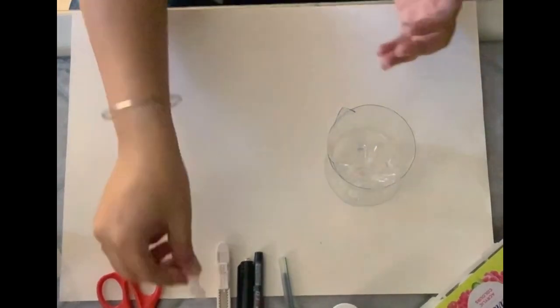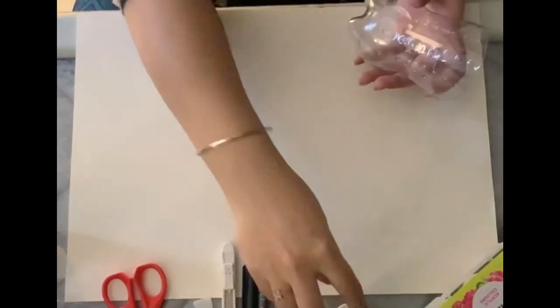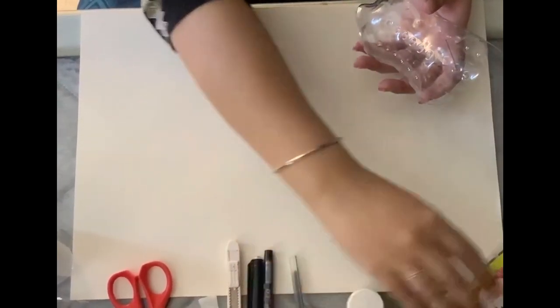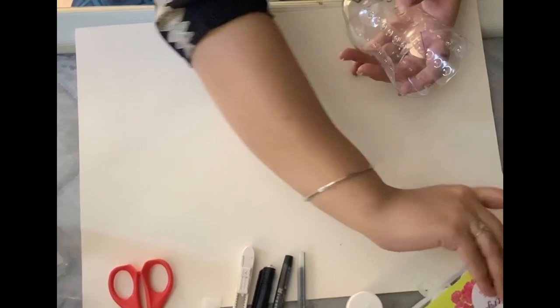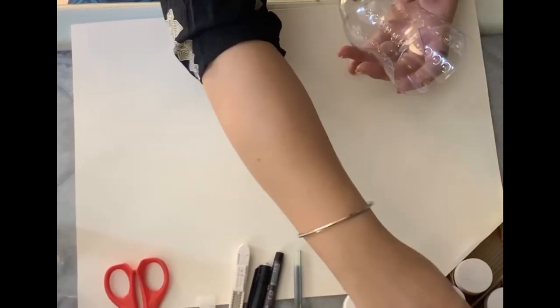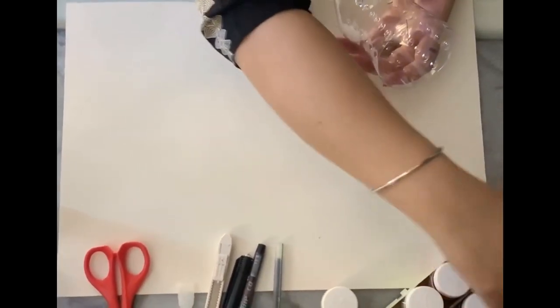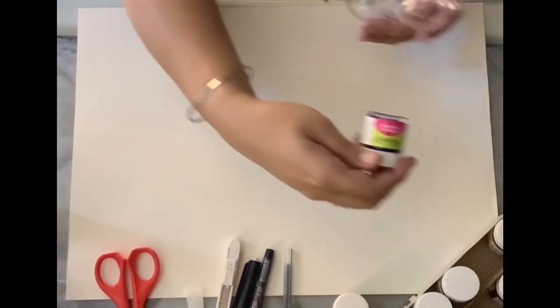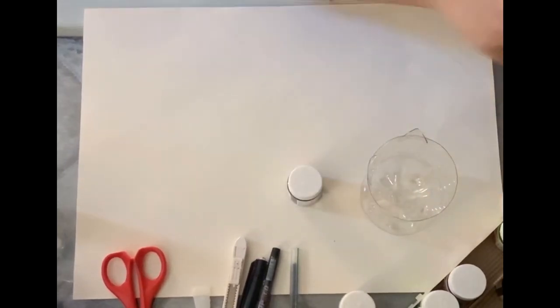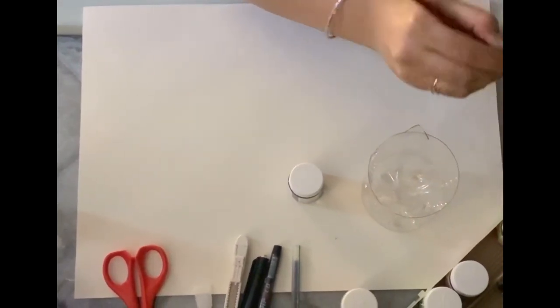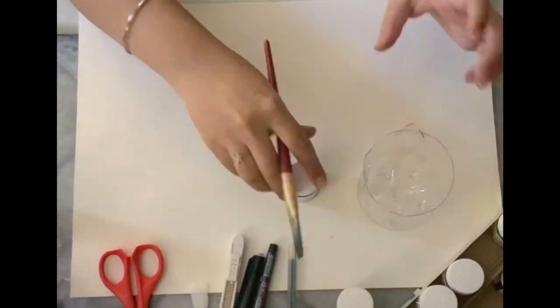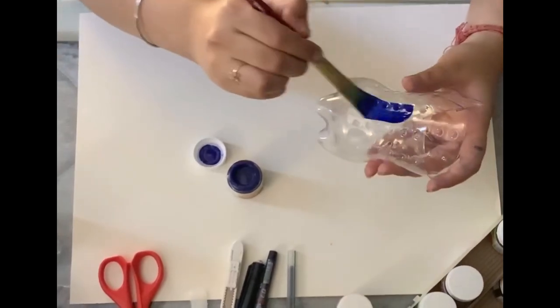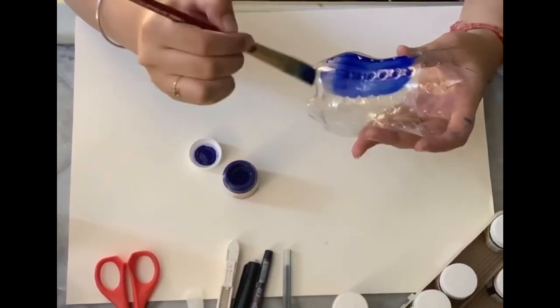Now what we have to do is paint this bottle using acrylic paint. You can use any color you like. For example, I am using dark blue color over here. Now using a flat brush and a little bit of water, you will paint this bottle like this.